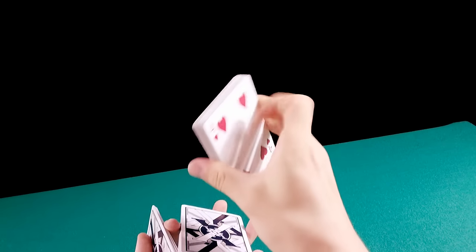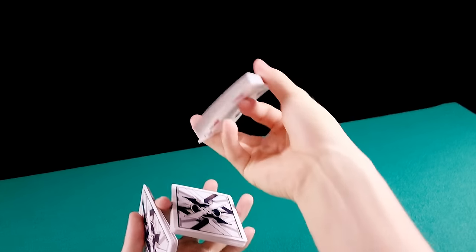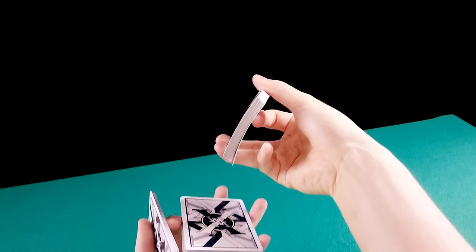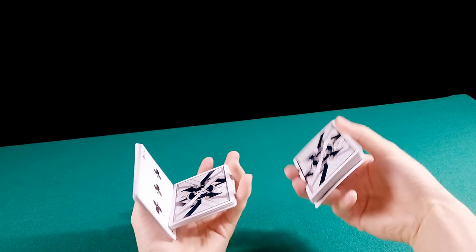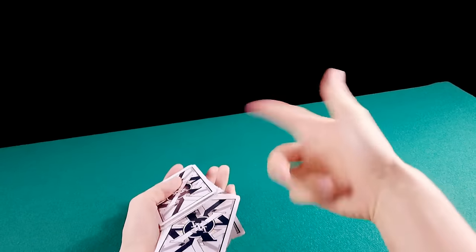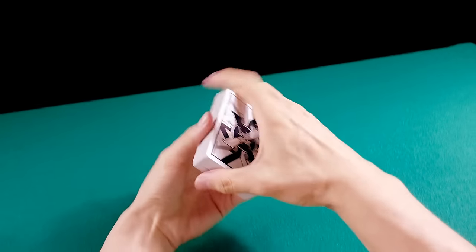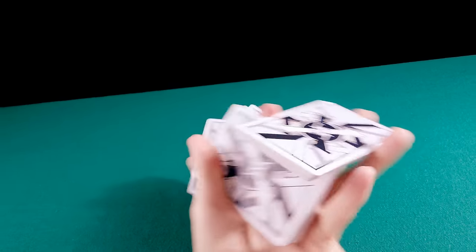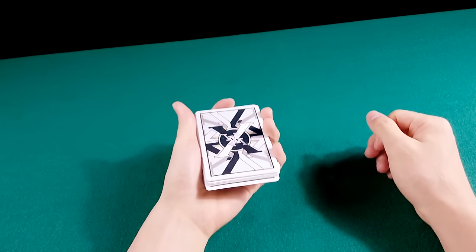O indicador vem aqui. E empurra o monte. Fica empurrando o monte. Enquanto o polegar fica impedindo com que ele saia voando. Você vai fechar. Quando você for terminar o Revolution Cut, você joga o monte. Faz com que ele dê um giro. E você fecha o monte. E você conclui desse jeito.